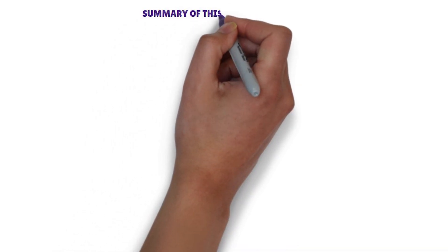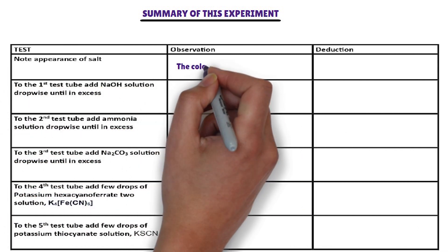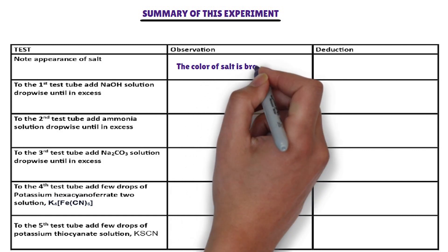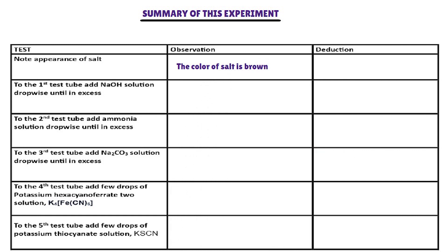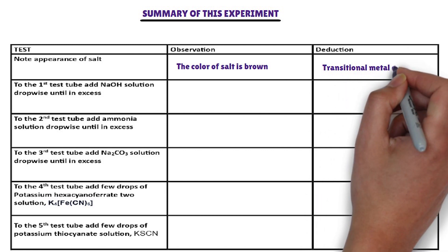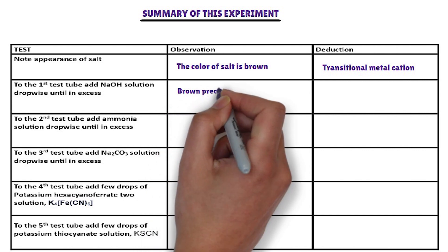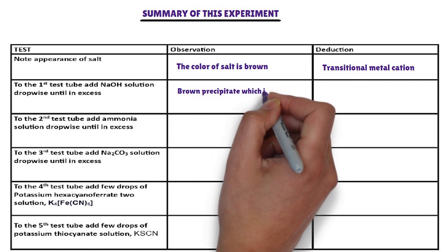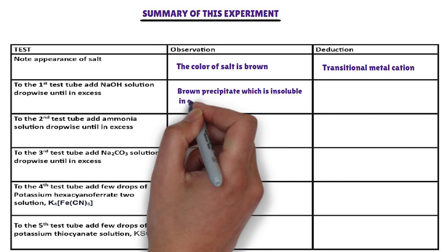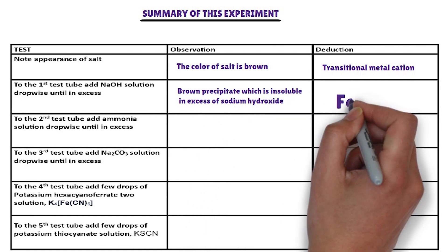Summary of this experiment. Observation: the color of the salt is brown. The brown color indicates that the cation present in the salt is a transition metal cation — for example, iron-2-ion or iron-3-ion. In the first test tube, sodium hydroxide is added dropwise. The cation that forms a brown precipitate with sodium hydroxide, insoluble in excess, is iron-3-ion.